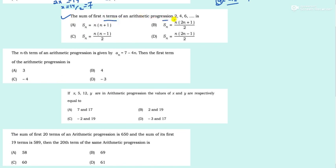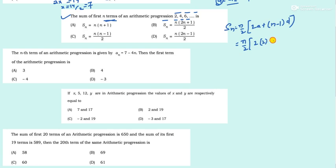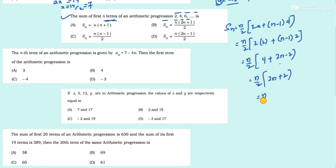Next: Find the sum of the first n terms of an AP. Use the formula S_n = n/2 × [2a + (n−1)d]. With a = 1 and d = 2: S_n = n/2 × [2 + (n−1)×2] = n/2 × [2 + 2n − 2] = n/2 × 2n. Taking 2 common gives n/2 × 2(n+1) = n(n+1). So option A is correct.